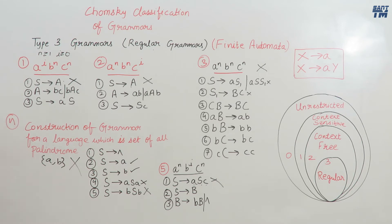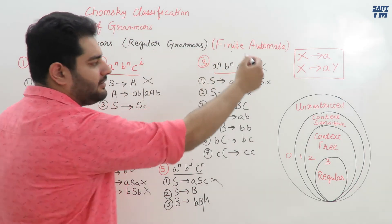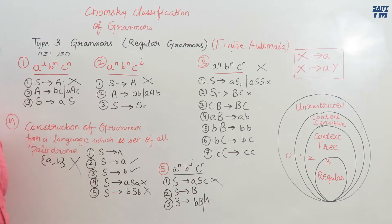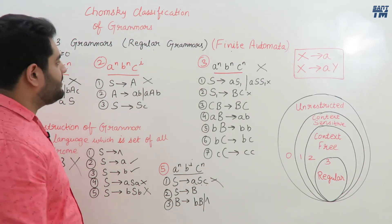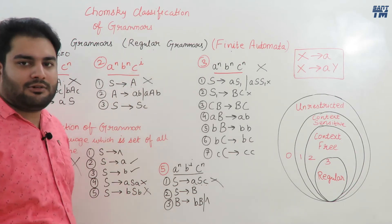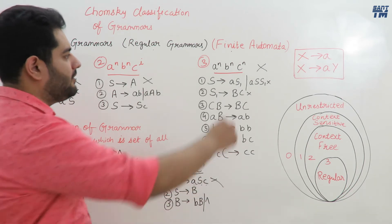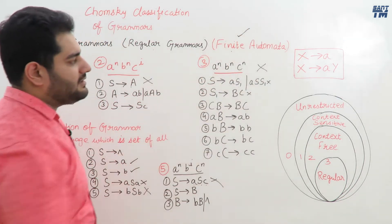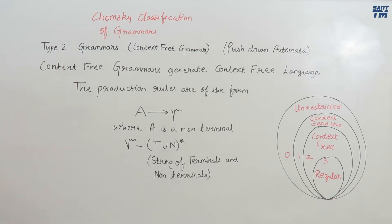After studying type 2, type 1, and type 0, we can determine which category they belong to. One more important property: if there exists a finite automata for a language, then that language is regular and the grammar for that language will be a regular grammar. There must exist a finite automata for a language to be regular.